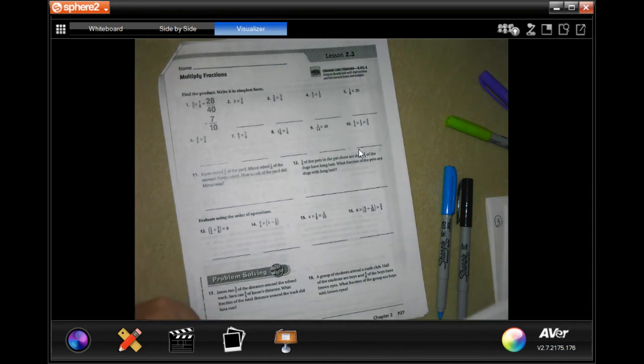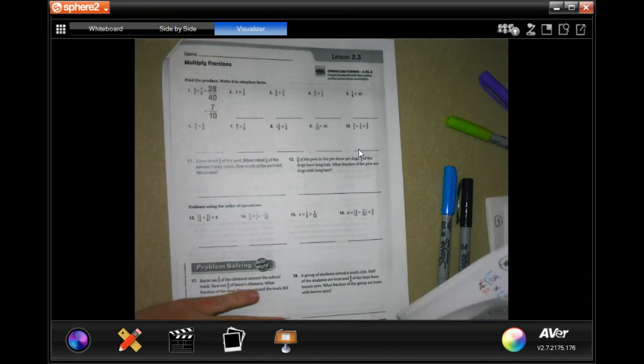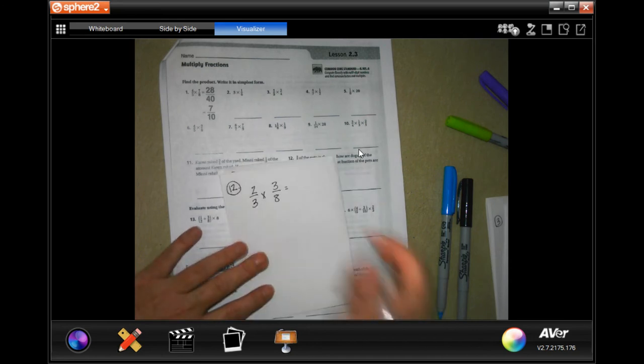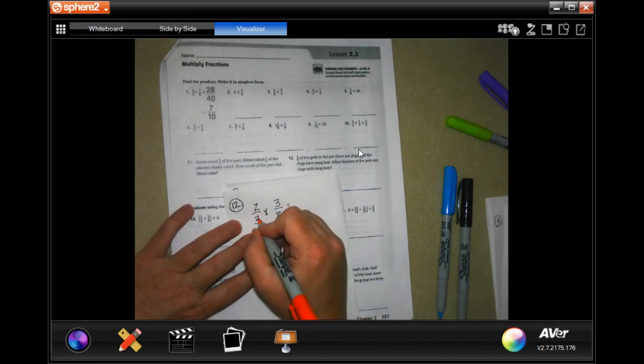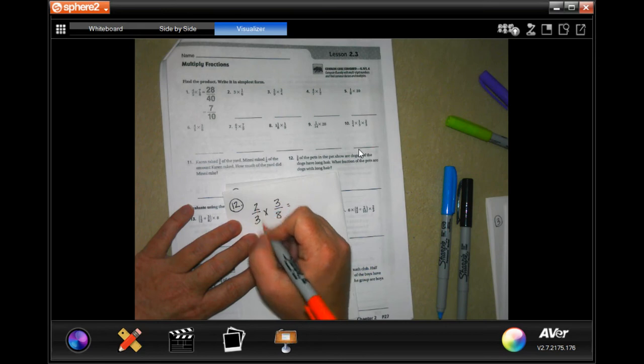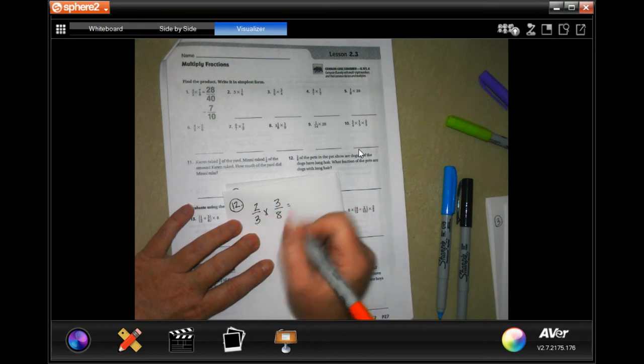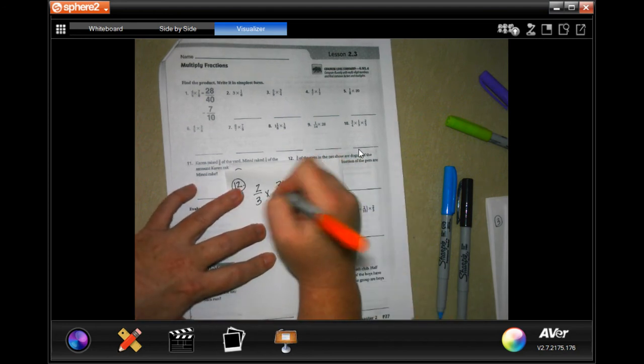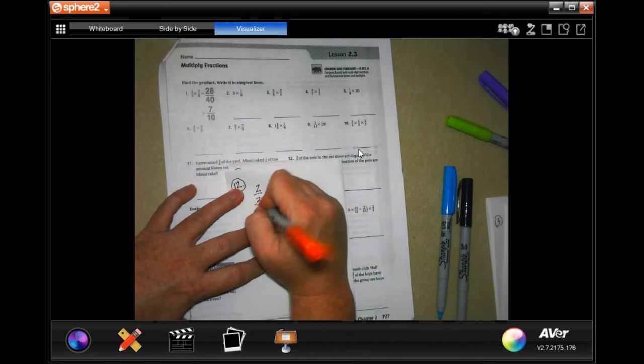Number 12 says, 3/8 of the pets at the pet show are dogs. 2/3 of those dogs have long hair. Which fraction of the pets are dogs with long hair? So 3/8 of the dogs, which are 2/3, so 3/8 of the 2/3 that are dogs, have long hair. See those same numbers? Cross cancel, put a 1.